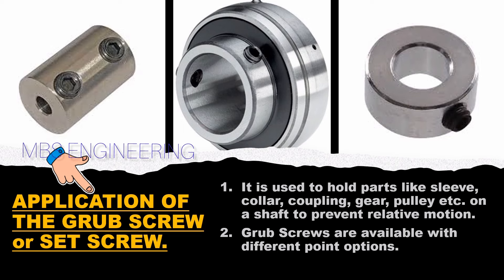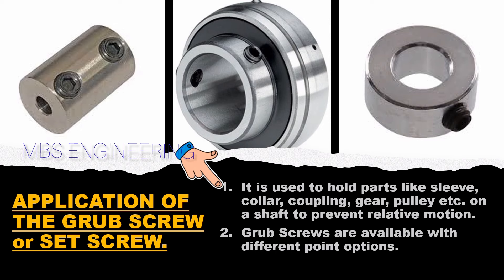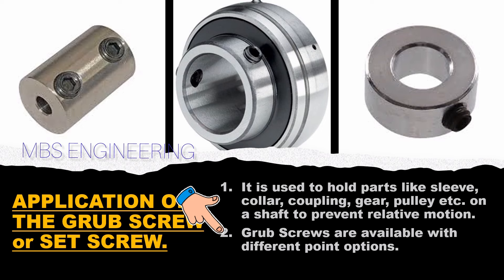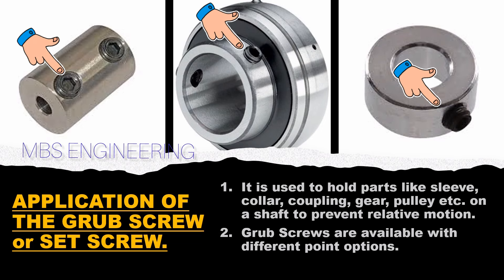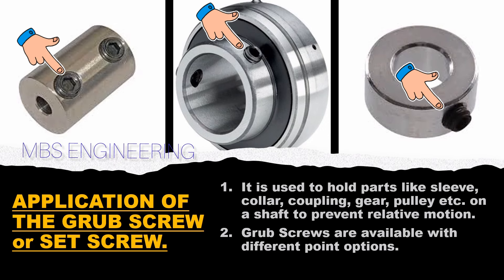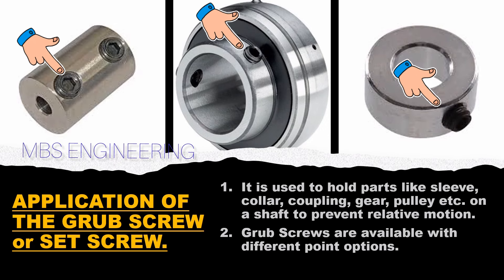We will understand the application of the grub screw or set screw. It is used to hold parts like sleeve, collar, coupling, gear, pulley, and other applications on a shaft to prevent relative motion. Grub screws are available with different point options. Please refer to the picture of the grub screw or set screw which is used to hold parts like sleeve, collar, coupling, gear, and pulley on a shaft to prevent relative motion.